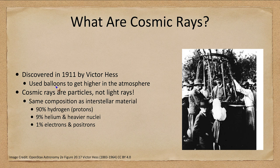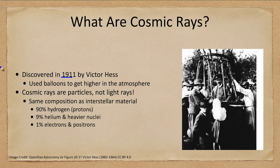Cosmic rays were discovered in 1911 by Victor Hess. They don't get down to the ground — they get absorbed high up in the Earth's atmosphere. In order to study them we need to get higher in the atmosphere, which was first done using a balloon, where there's less atmosphere and we are able to detect these particles.